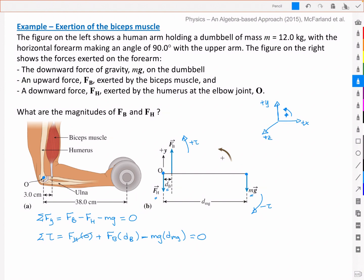This term falls out because of the zero, and I know this term, I know these, and I know the dB. So I really can use this equation now to solve for the force of the biceps. And I simply have then mg times dmg divided by dB. For a mass of 12 kilograms, acceleration due to gravity, dmg is equal to 38 centimeters or 0.38 meters.